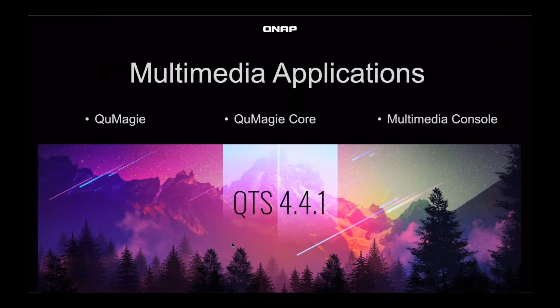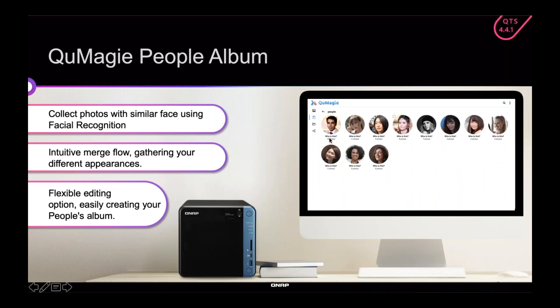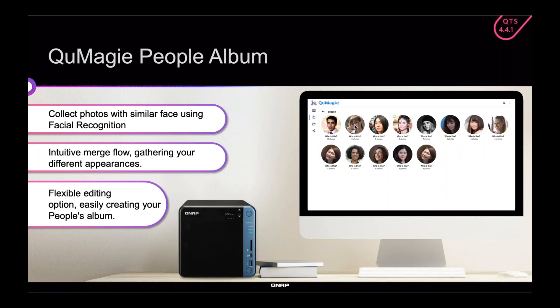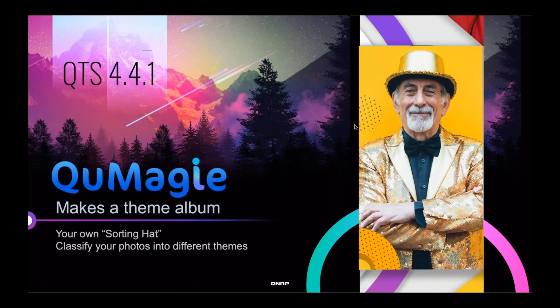For the last section, I want to talk about our smarter multimedia applications. QMagic has object and face recognition, which makes it a lot easier to categorize your photos. QMagicore is the AI engine that QMagic uses, and Multimedia Console is the application that allows you to manage your multimedia content for your different multimedia apps. QMagic will categorize your photos and make it really easy to find things — for example, it will recognize that 19 photos are of the same person, or 11 photos are of another person, so you don't have to sift through all your photos manually.